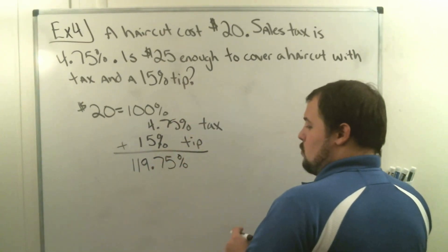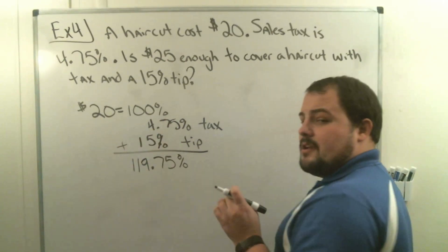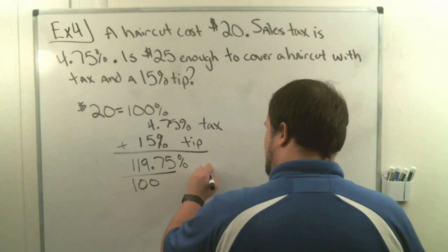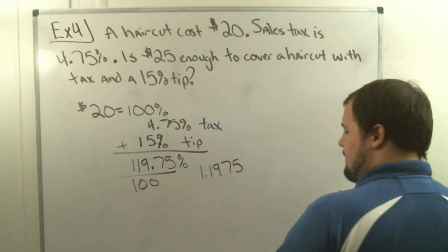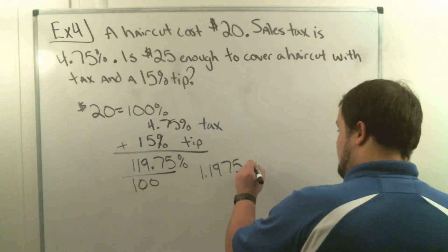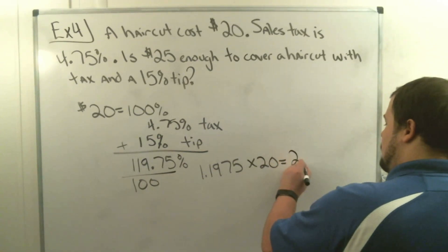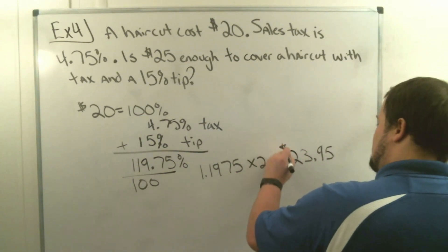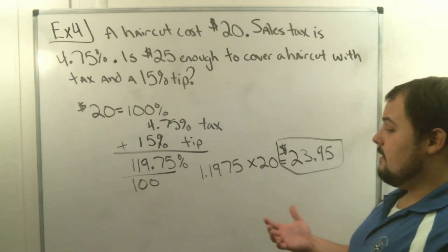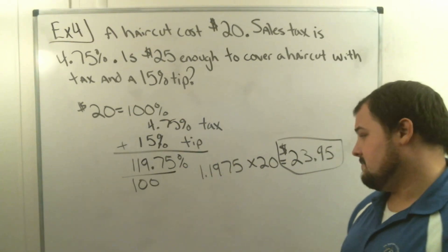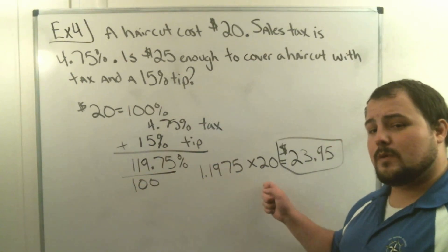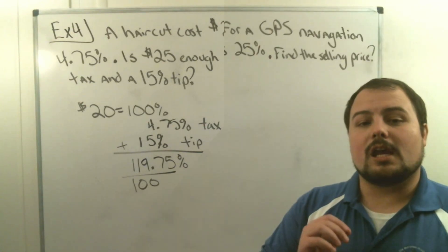We take 1.1975 and multiply it by $20. Typing that into the calculator gives us $23.95. So if we pay the tax and tip the stylist 15%, the total is $23.95, which means $25 is enough to cover it. We added the tax and tip to the percentage, changed the percent to a decimal, multiplied by the actual price, and found our total.